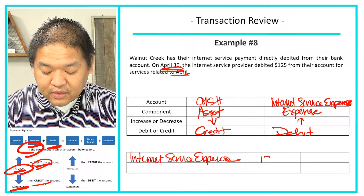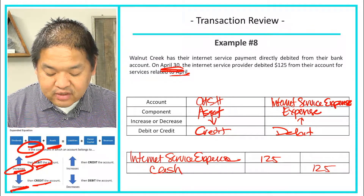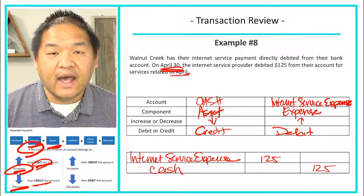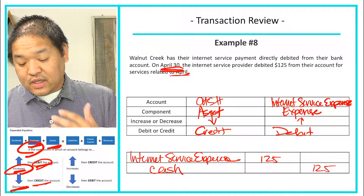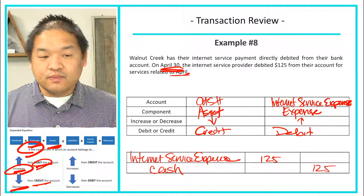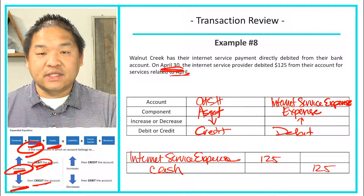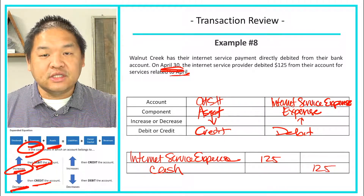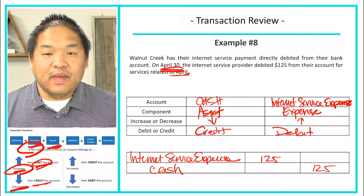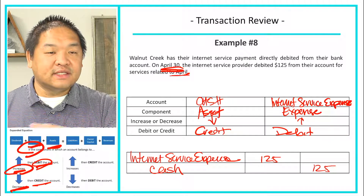Using our expanded equation: cash is an asset that is decreasing, so we credit cash. Internet Service Expense is increasing, so we debit it. Debits go before credits: debit Internet Service Expense $125, credit Cash $125. This is done electronically, which is how it's done nowadays more often than not, and this is the entry we need to make in our accounts.